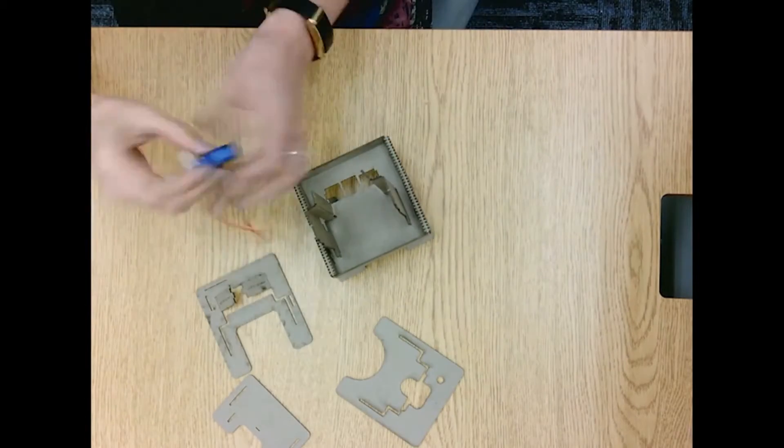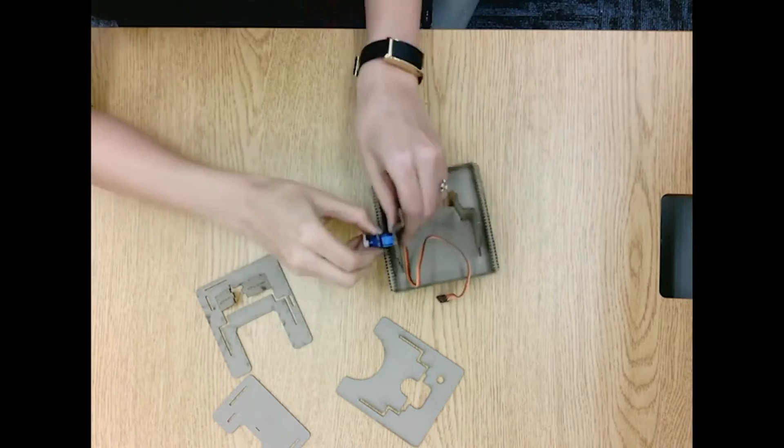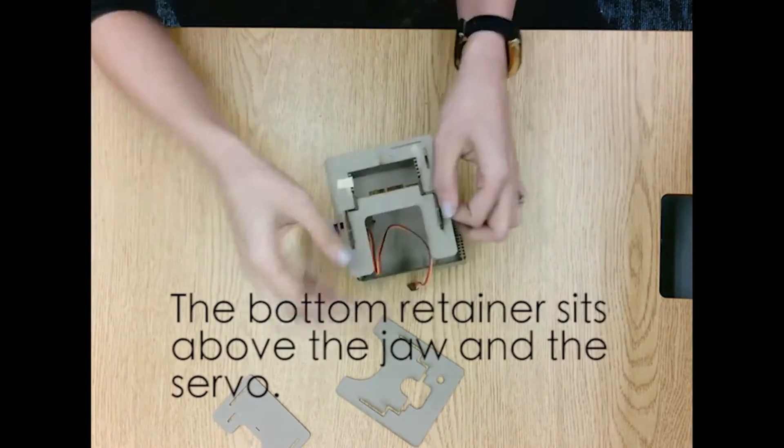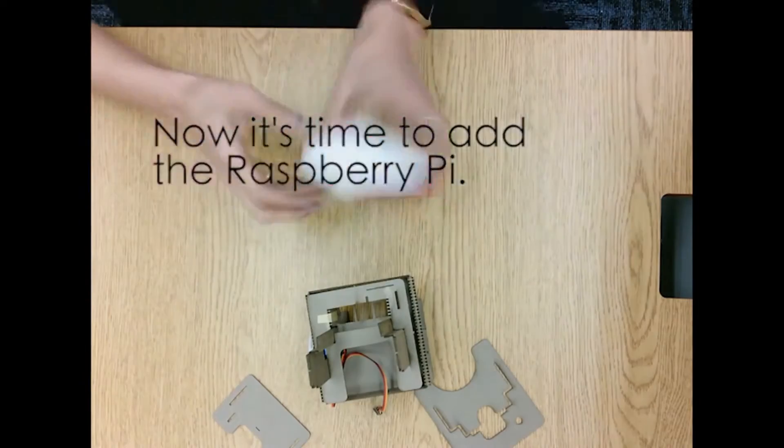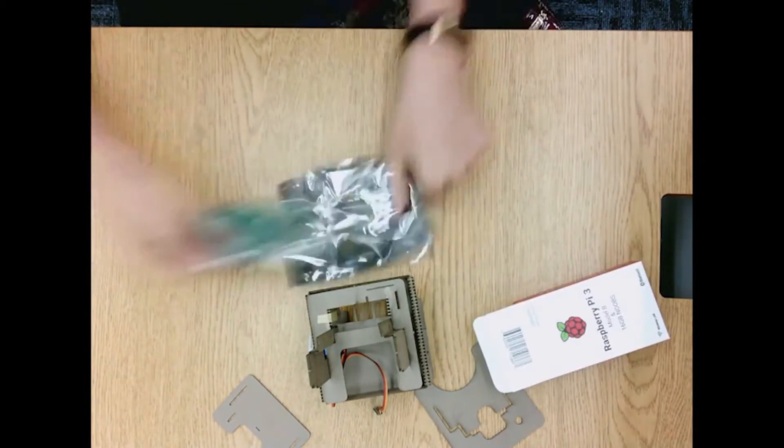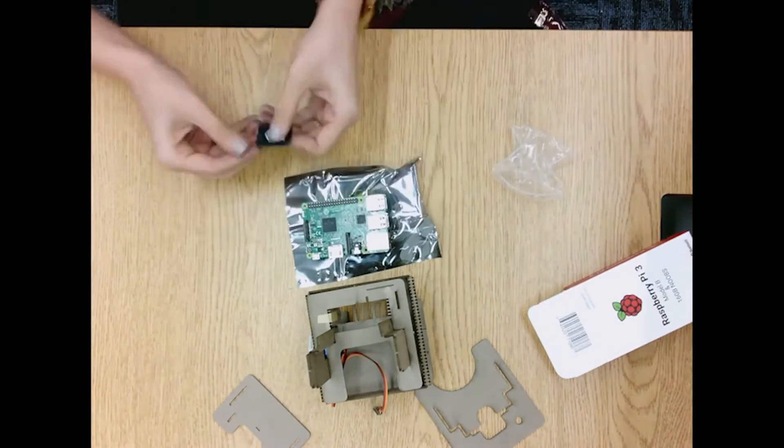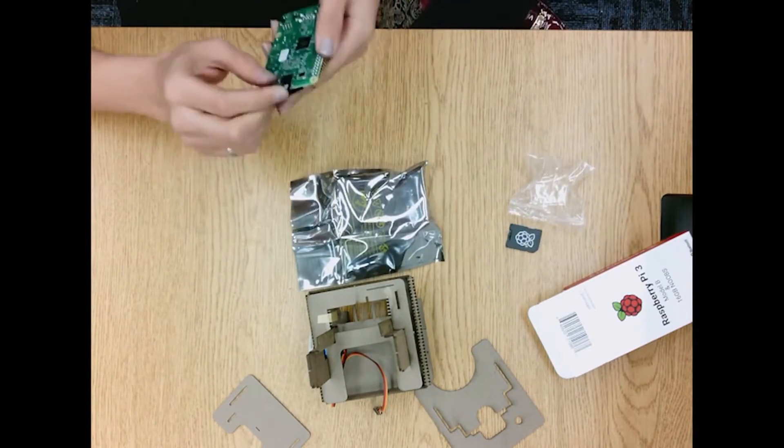This video shows the steps to build TJ Bot using a do-it-yourself kit consisting of a cardboard cutout, a Raspberry Pi, and a variety of add-ons including an RGB LED light, a microphone, servo motor, and cameras.